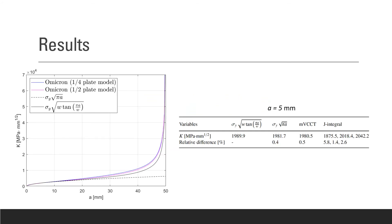So now for some results. Here on the graph on the left side, we can see the results for the modified virtual crack closure technique. So here K, stress intensity factor, was calculated for various values of a, also meaning for various crack lengths. We can see that the Omicron software outputs values really close to the analytical solution of the periodic crack. So we have very good results using MVCCT.